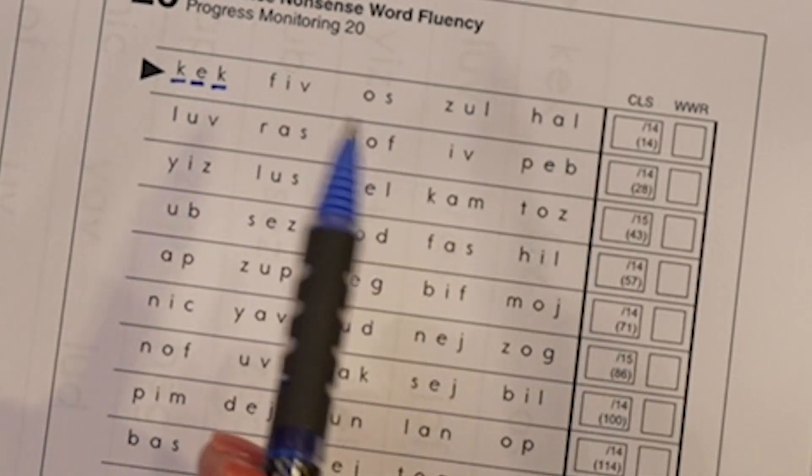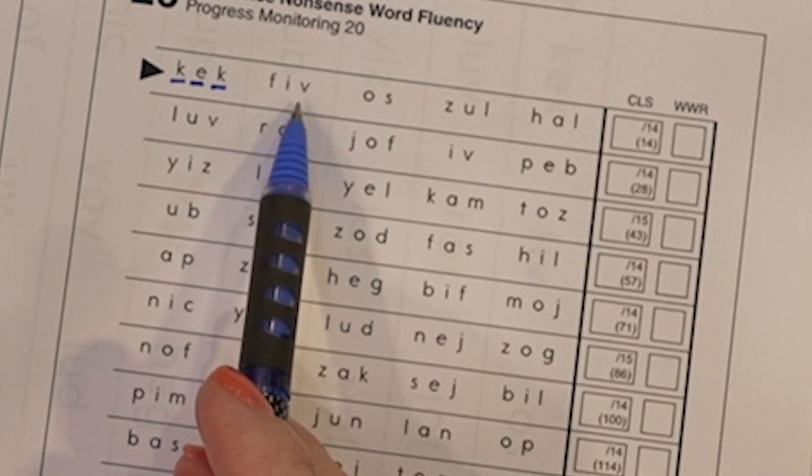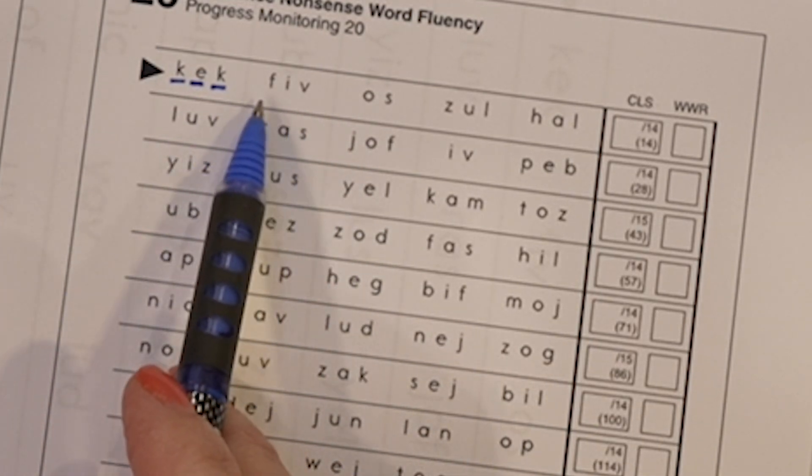If the student says one separate sound and two sort of blended together you're going to write like that. If, if, if. And I would give that one line.